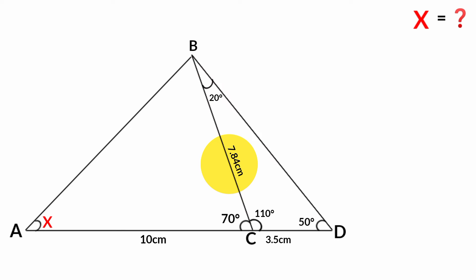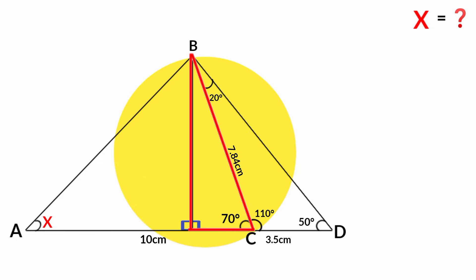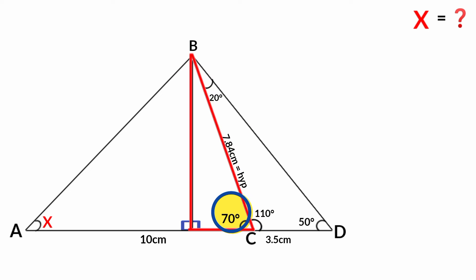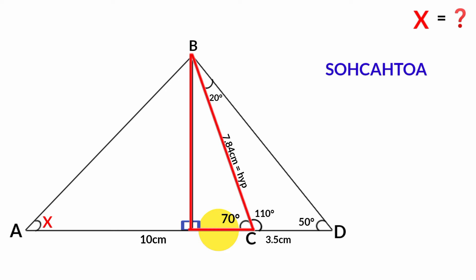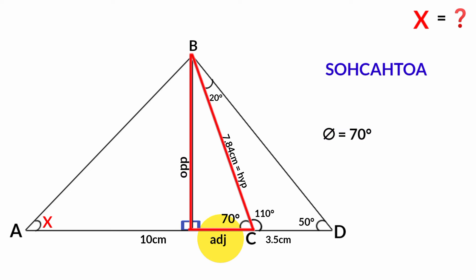The next step: we draw a line perpendicular to this side, creating a right angle triangle here. Since we have the length of the hypotenuse and the size of this angle, we can use SOH-CAH-TOA to find the length of the opposite and adjacent sides. Taking 70 degrees as theta, there is the opposite and there is the adjacent.